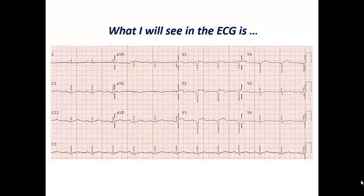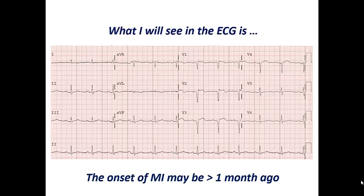For example, in this ECG I can see ST elevation in V1 to V4. When I ask about the onset of MI and I know it was more than one month ago, in this case I would assume that this patient may have an aneurysm in the wall corresponding to the lead territory, so I can expect an apical LV aneurysm or aneurysm in the anterior wall.